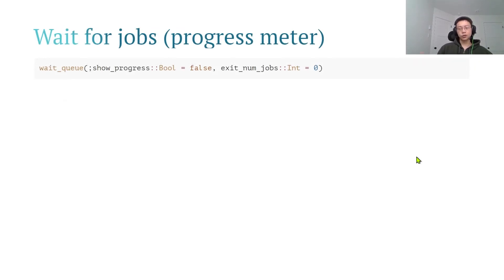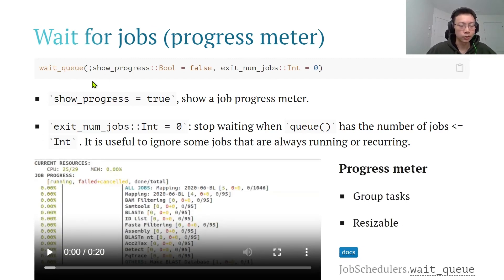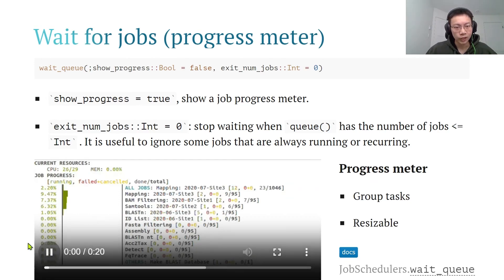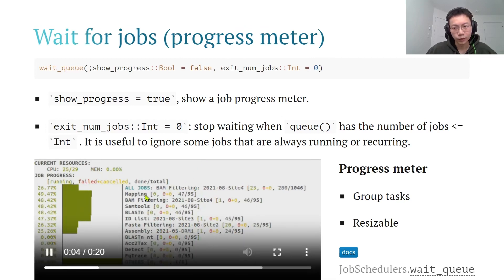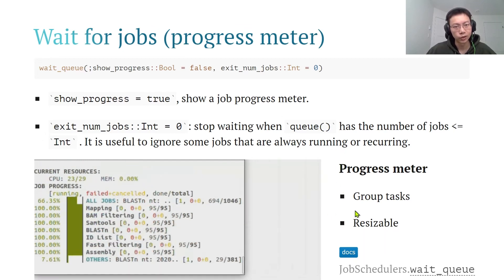Sometimes we want to wait for all jobs to finish. For this, we have a function called wait_queue. It integrates a progress meter so people can monitor job progress. The n_jobs parameter stops waiting when the queue has fewer than a specific number of jobs — this is useful when some jobs run in the background doing regular monitoring and we don't need to wait for those. Here is a video of how the progress meter looks. You may notice it has groups — for example, the mapping group has 95 total tasks. You can also resize your window and the progress meter will fit.